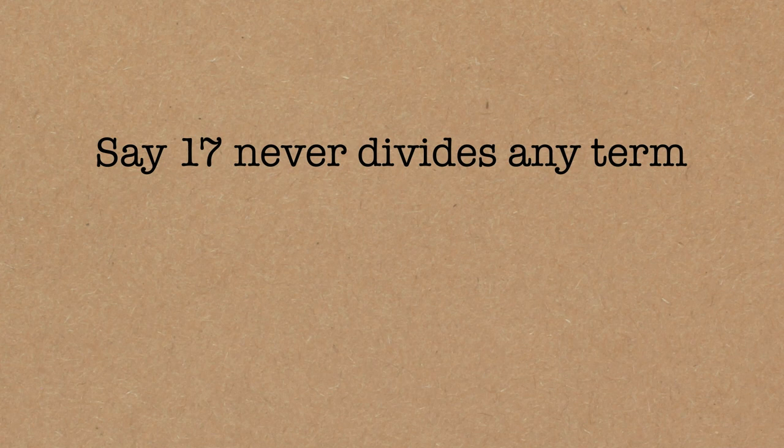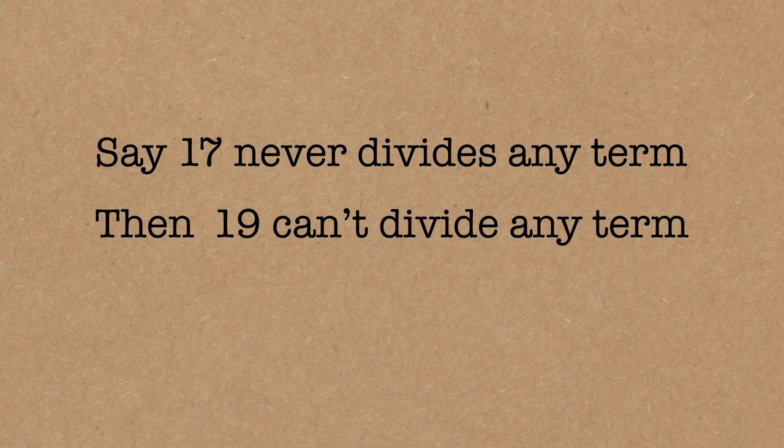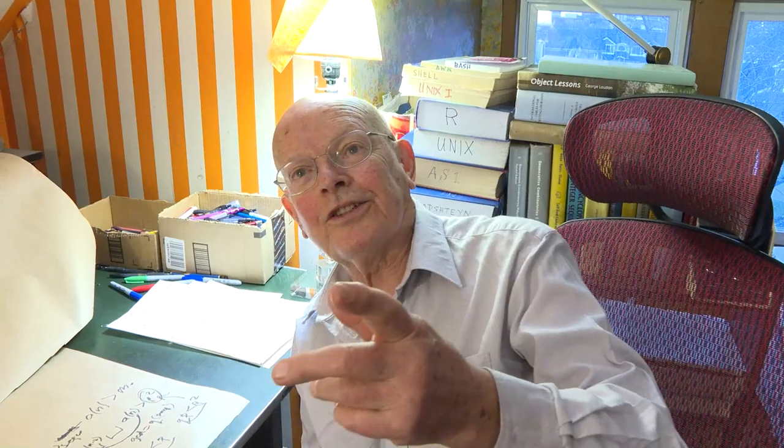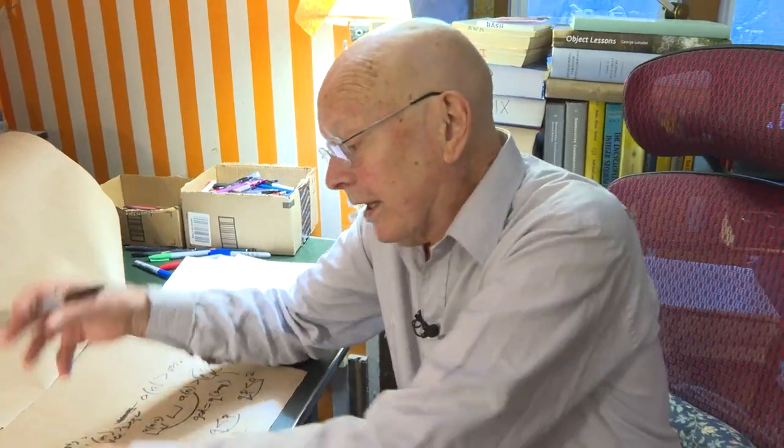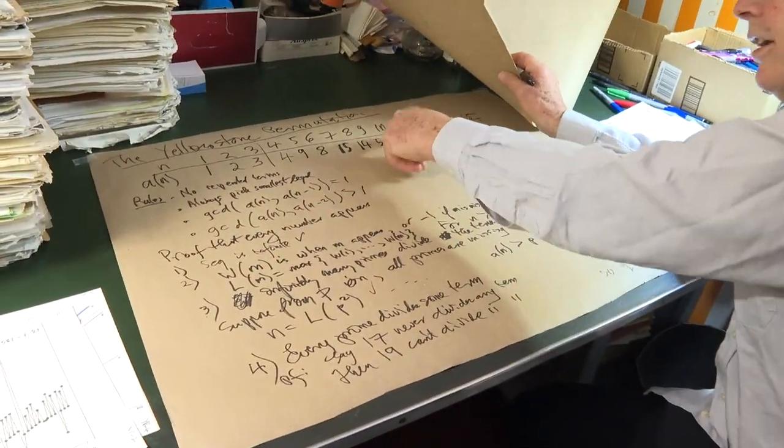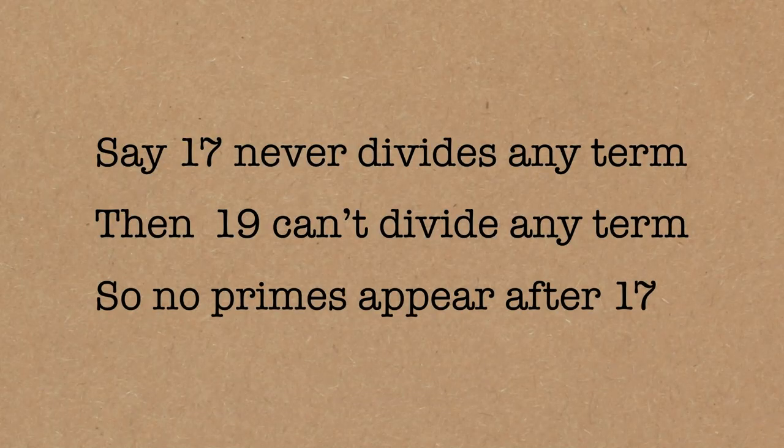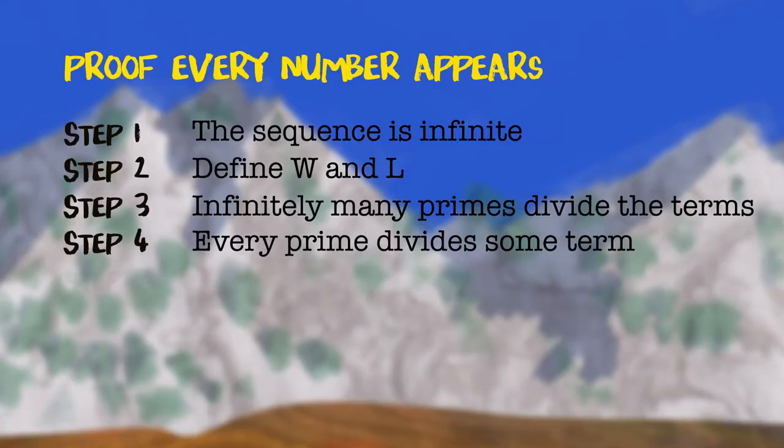Let's say 17 never divides any term. Then I say 19 can't divide any term either. Because the first time you saw a term that was divisible by 19, you could have used 17 instead. 17 didn't appear. If 17 doesn't appear, you can't have a 19. Because whenever you got to a term that had a 19 in it, you could have used a 17 instead. If 17 doesn't appear, 19 doesn't appear, 23, 101, none of the primes bigger than 17 appear. So that means the only primes in it are 2, 3, 5, 7, 11, 13, and 17. But we know there are infinitely many primes in the sequence. That was step 3. So we have a contradiction. So, every prime divides some term.